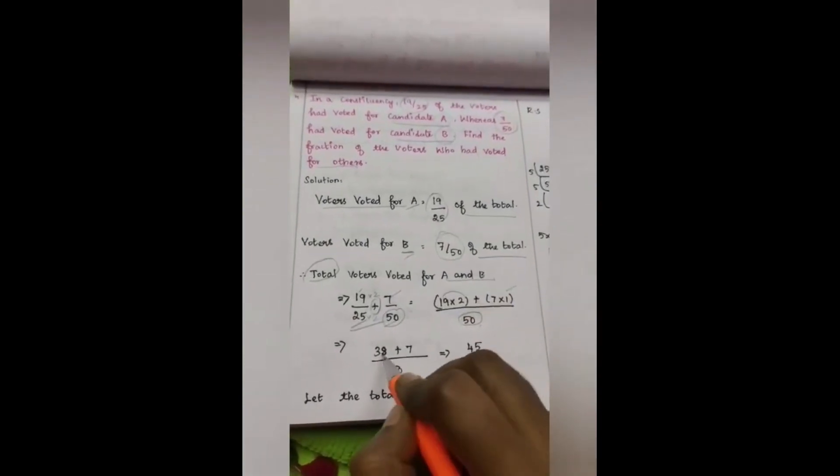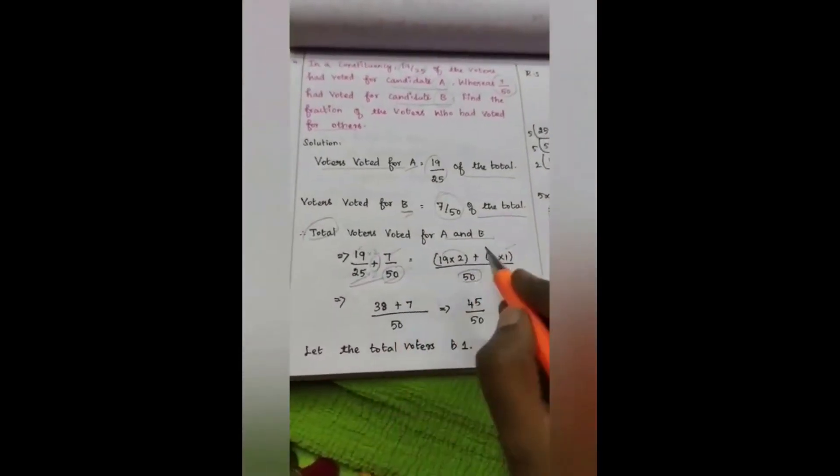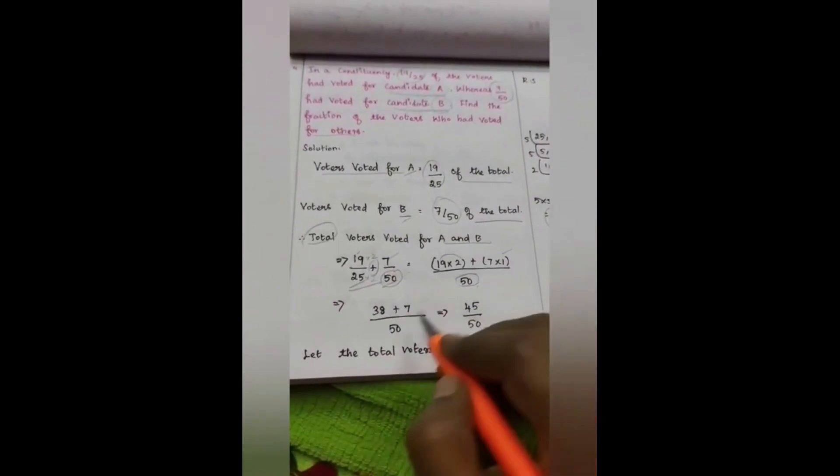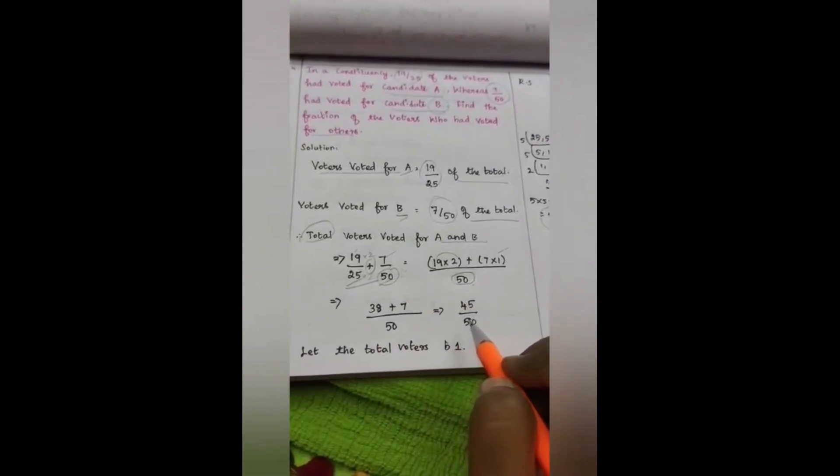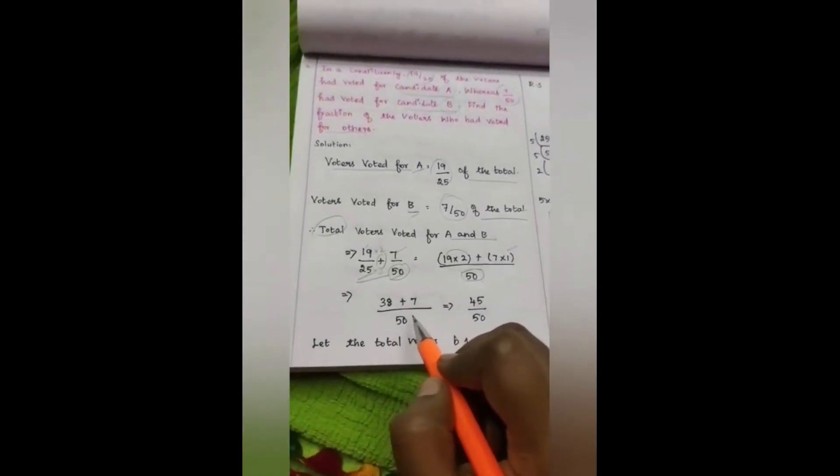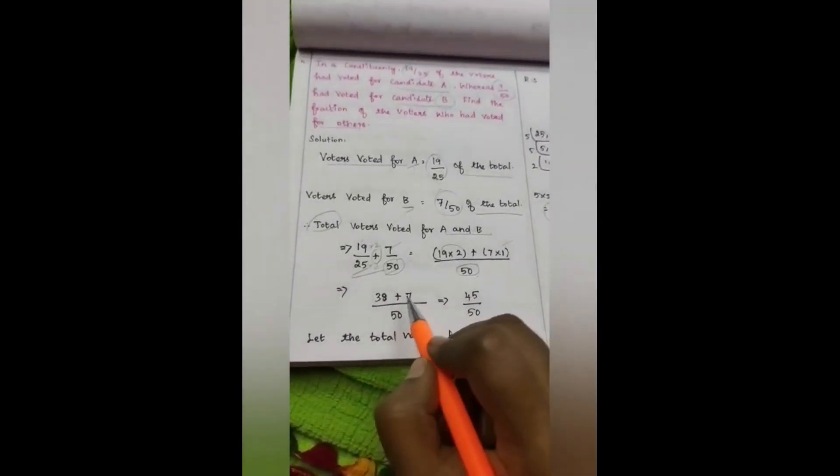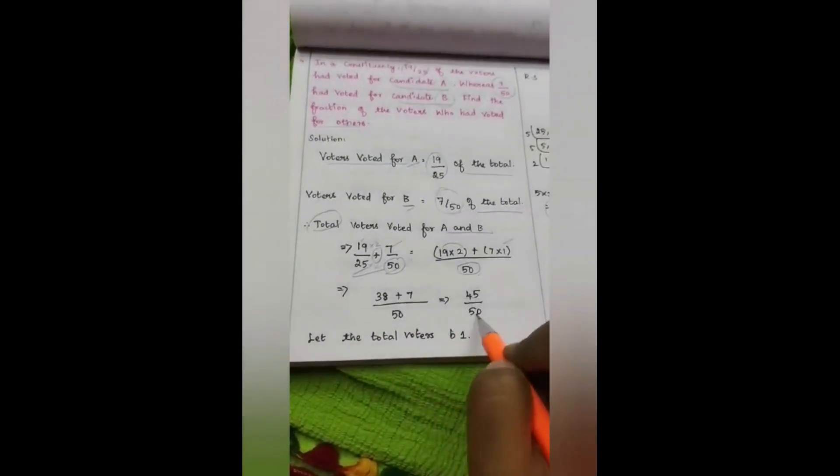19 into 2 becomes 38. 19 twos are 38, plus 7 into 1 is 7, divided by 50. Therefore, 38 plus 7 becomes 45 divided by 50.